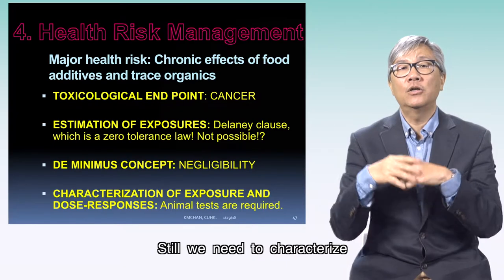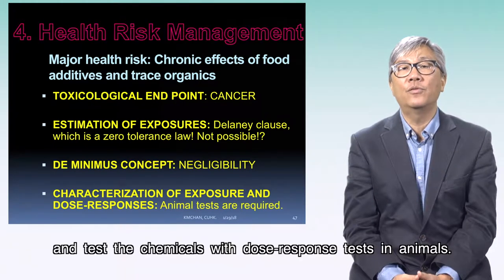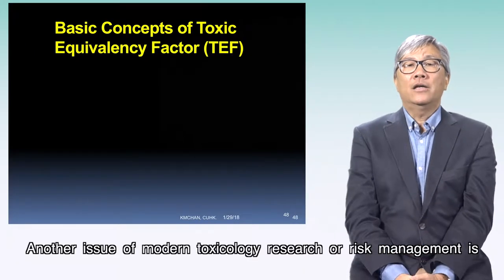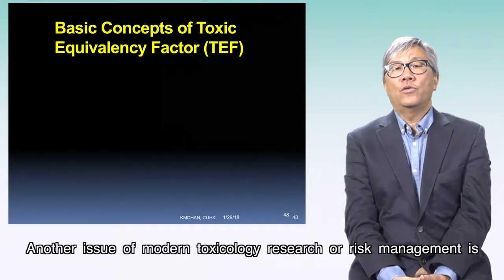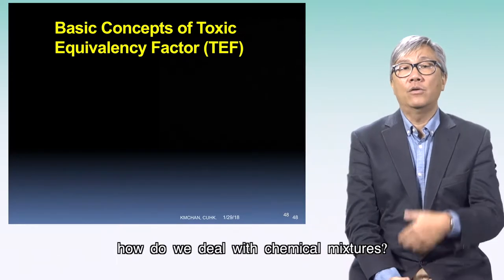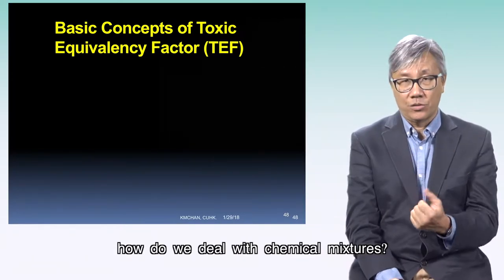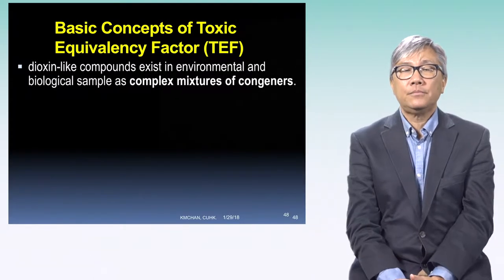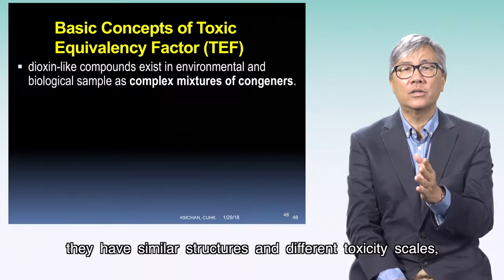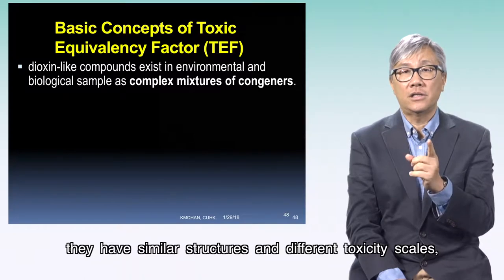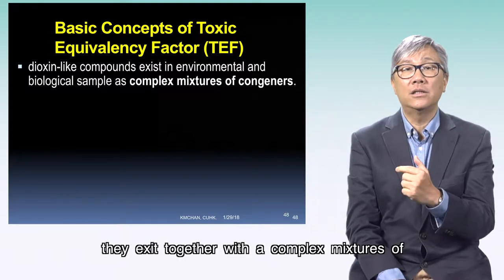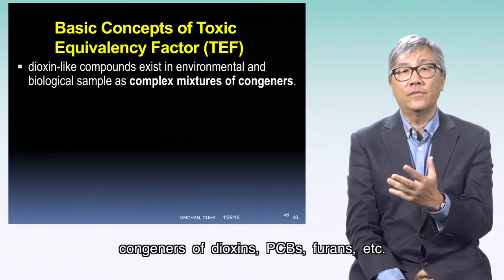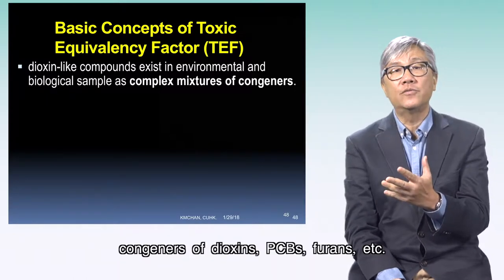Still, we need to characterize and test the chemicals with dose-response tests in animals. Another issue of modern toxicology research and risk management is how do we deal with chemical mixtures. For example, dioxins and dioxin-like compounds have similar structures and different toxicity scales. They exist together as complex mixtures of congeners of dioxins, PCBs, furans, etc.